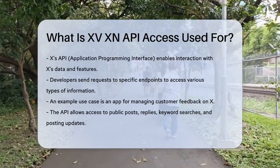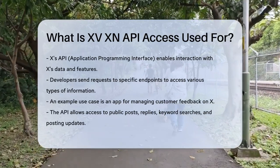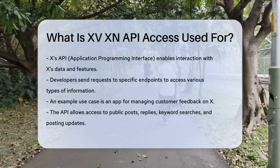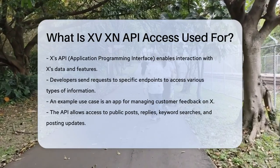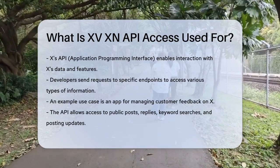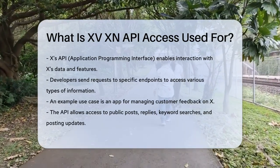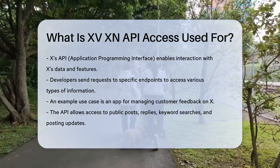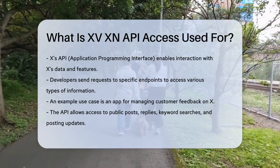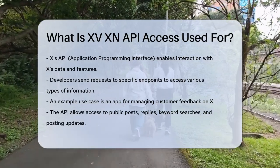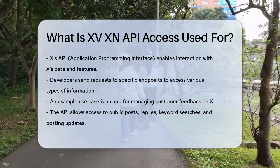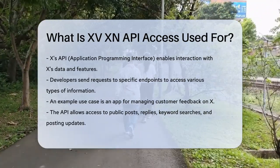X's API, or Application Programming Interface, allows developers to access and interact with X's data and functionalities. This is done by sending requests to specific endpoints, which are like unique addresses that correspond to different types of information.